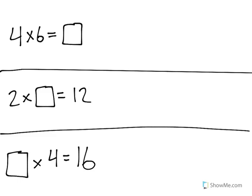In this video, we're going to look at how to fill in the blank for either a missing factor or a missing product in multiplication problems. The top problem, we have 4 times 6 equals blank. The blank is in the product, which means we're looking for the product of the problem, or the answer of the multiplication problem.